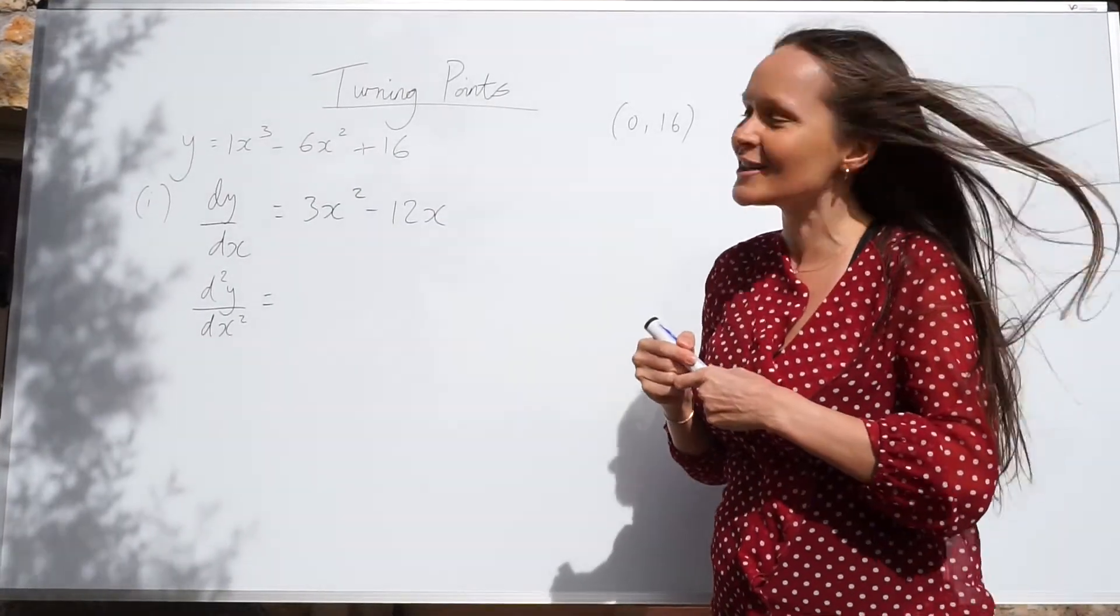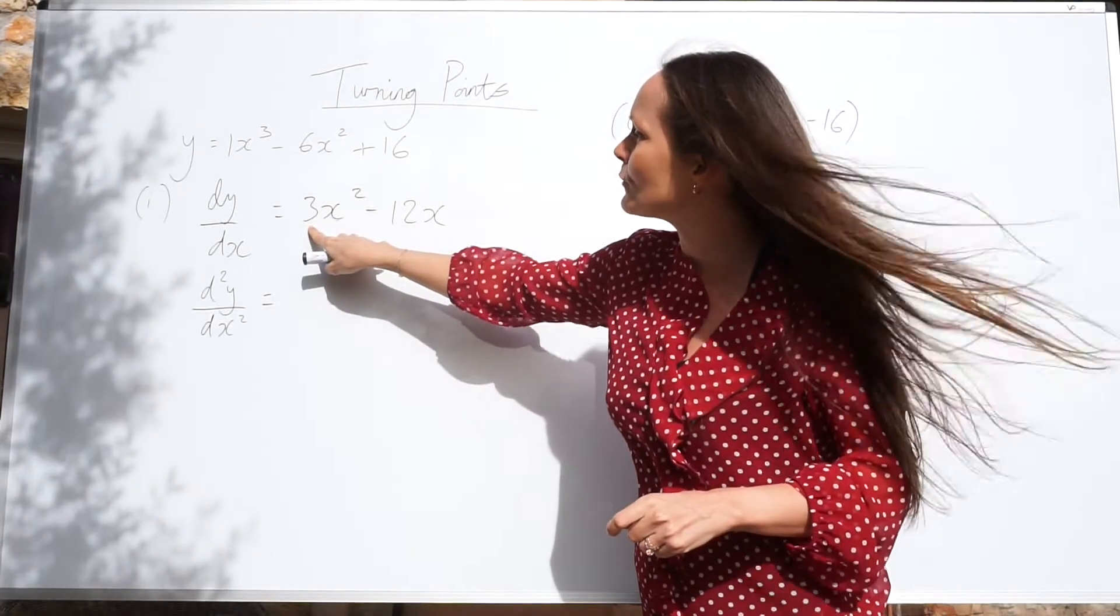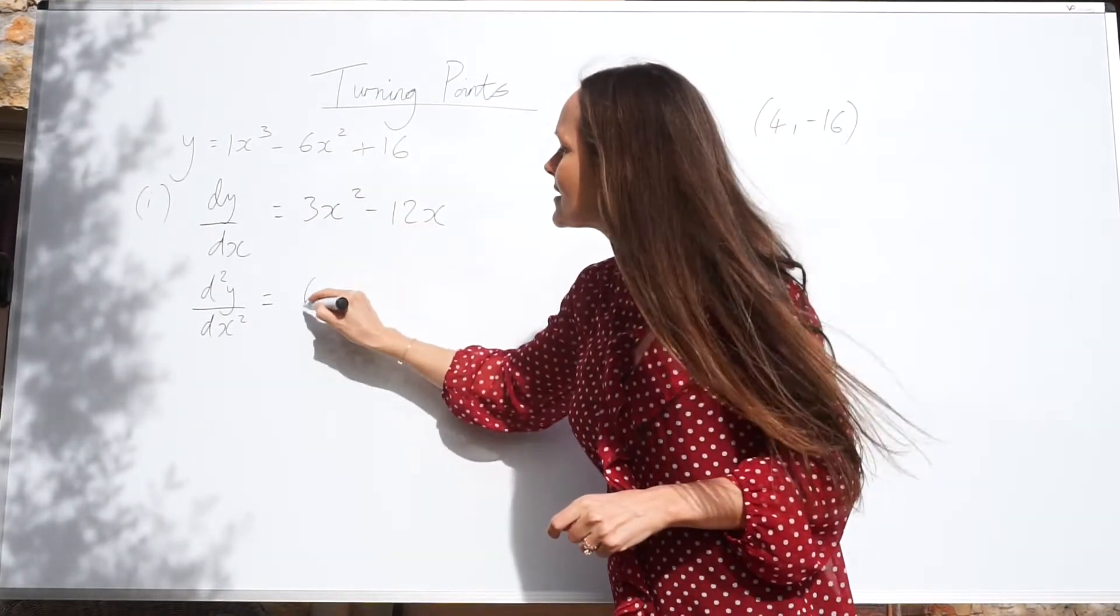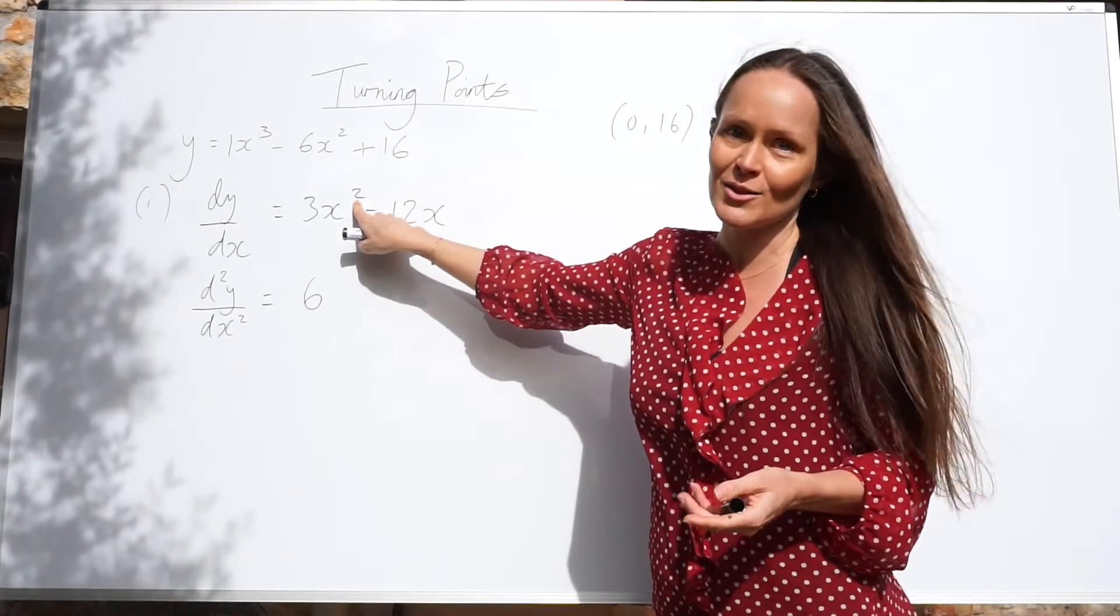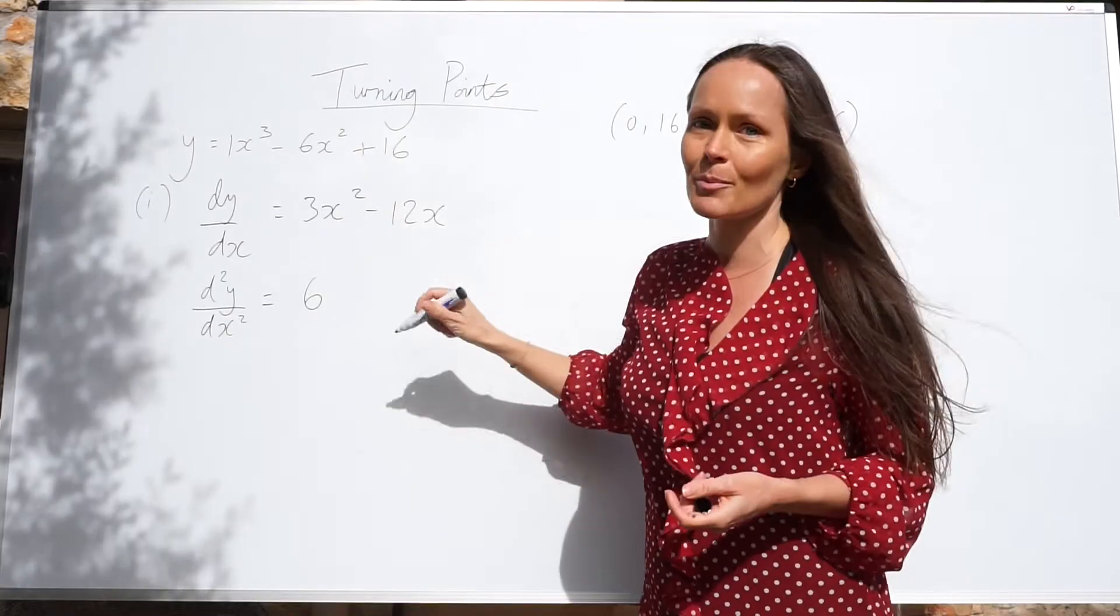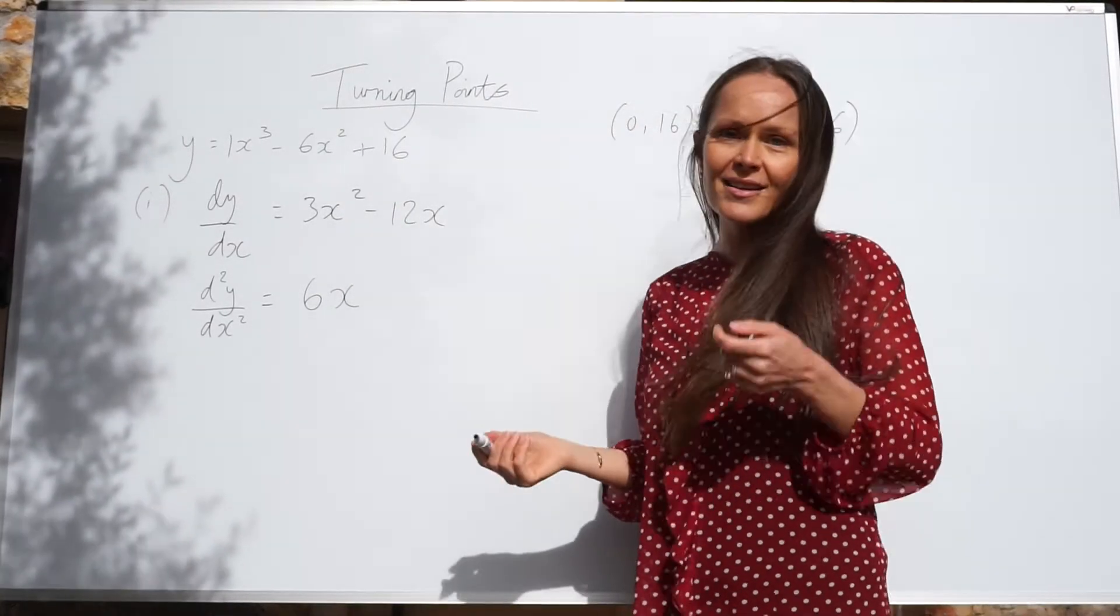So, remember, to differentiate, you take the power on the x, you multiply it by the number in front, so 2 multiplied by 3 is 6. This number decreases by 1, so 2 take away 1 is just 1. So we're left with x to the power of 1, or just x. Remember, x to the power of 1 and x, they're the same thing.